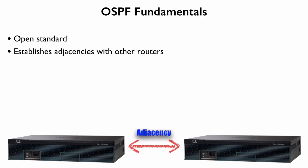That might happen if we're on an Ethernet segment and we have multiple routers on that segment — we don't have to have a full mesh of adjacencies. We'll talk about something called a designated router and a backup designated router, and those routers are going to form adjacencies with the other routers on that Ethernet segment.